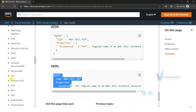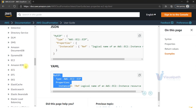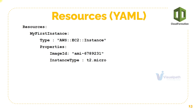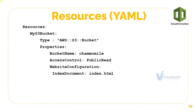One more example: S3 bucket. Under Resources, give a logical ID like 'MyS3Bucket'. Type: AWS::S3::Bucket. Properties — you can find all properties in the documentation. Here I'm giving BucketName, AccessControl set to PublicRead, and WebsiteConfiguration, which is another dictionary with IndexDocument and ErrorDocument. This resource will create a bucket with public read access and a website configuration. For a security group: logical ID, Type AWS::EC2::SecurityGroup, Properties including GroupDescription, GroupName, and SecurityGroupIngress with IpProtocol TCP, FromPort, ToPort, and CidrIp.